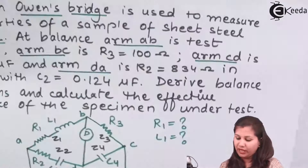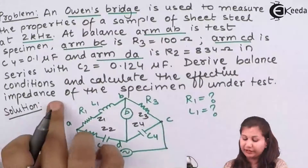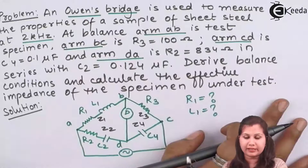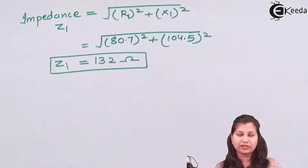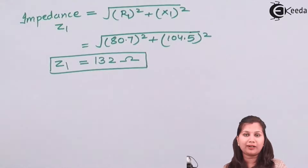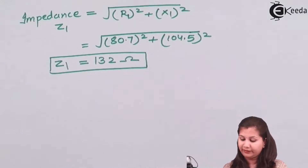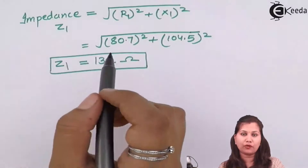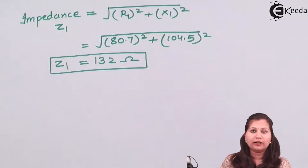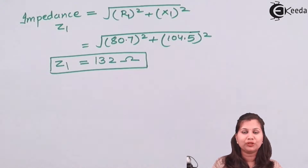In the question we were asked to first derive the balance conditions and then calculate the effective impedance of the specimen under test. We derived the balance conditions, obtained the values of R1 and L1, and then calculated the effective impedance Z1 = 132 ohms. In this way we can solve problems based on the measurement of inductance using the Ohms bridge. I hope this problem is clear to you. Thank you.